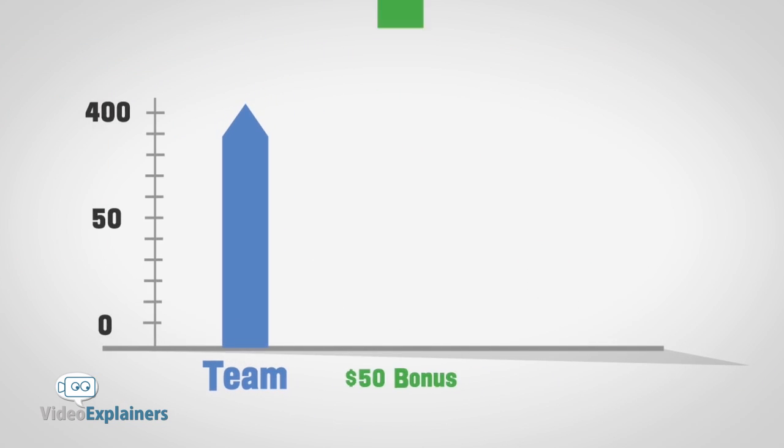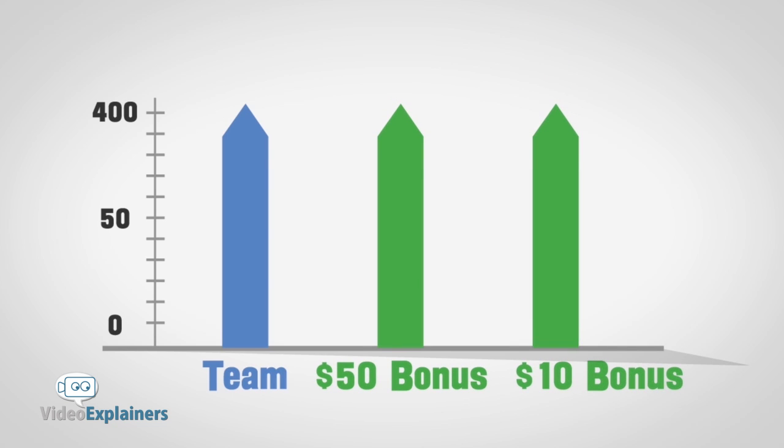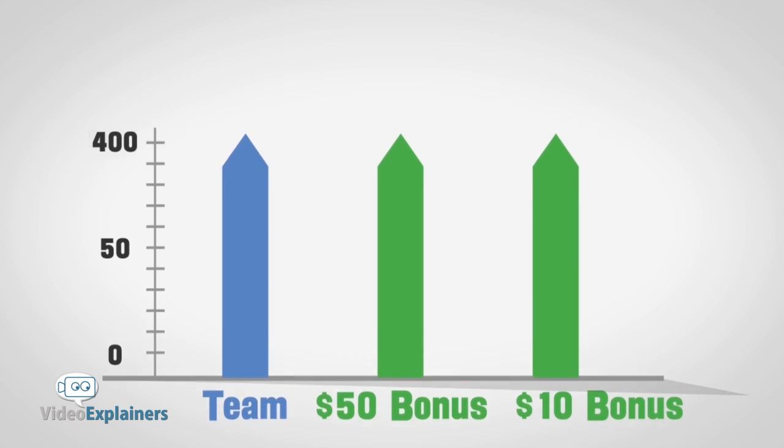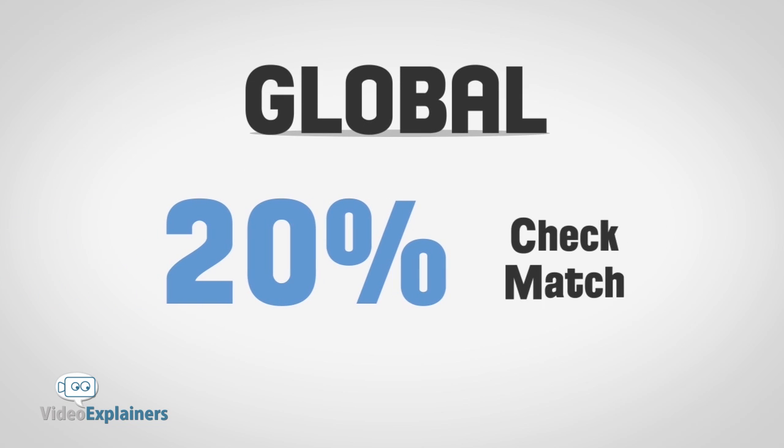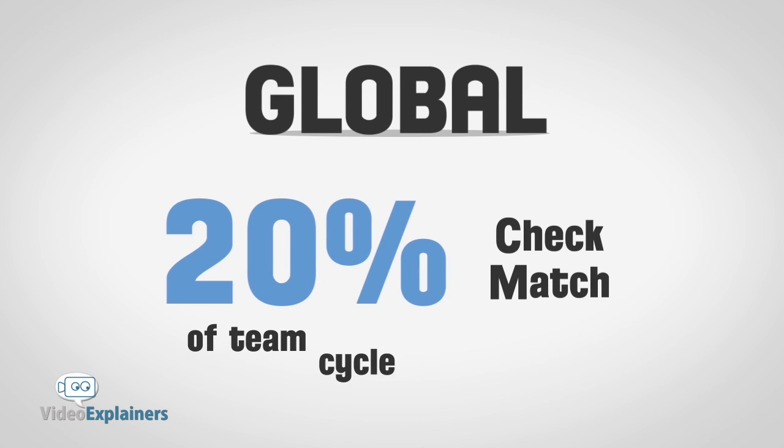As your team grows, so will your $50 and $10 bonuses. But it only gets better when you reach the rank of Global Affiliate and you will begin to earn a 20% check match of all your team's cycle commissions. There is no limit on this.